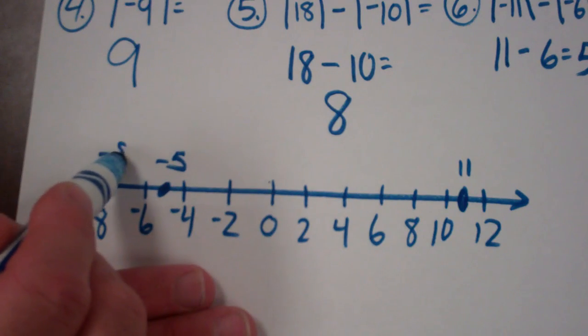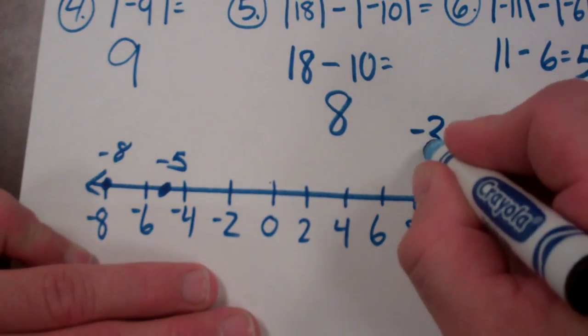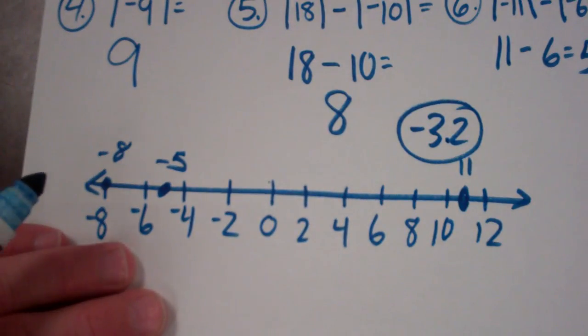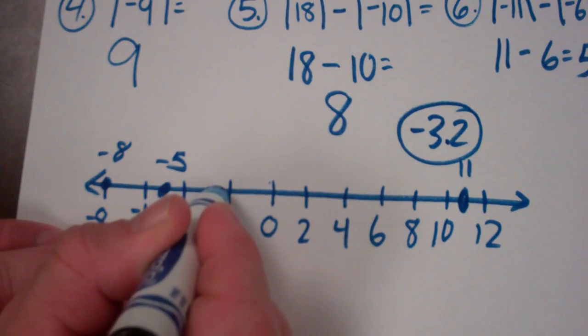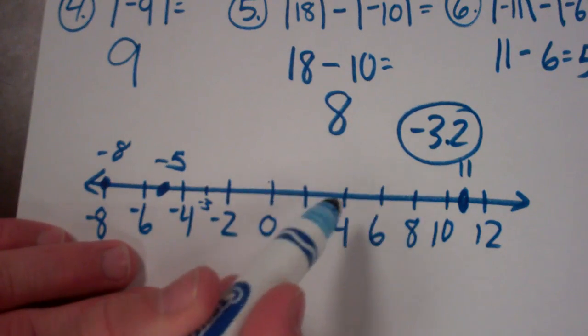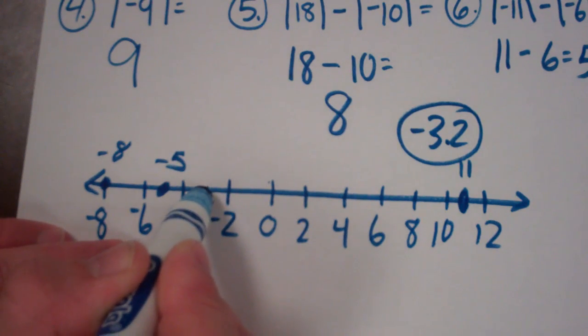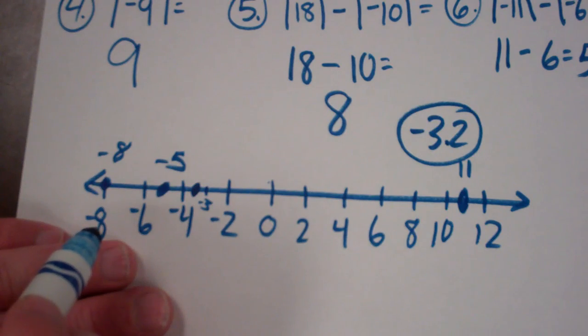The ones that confuse people, though, are things like this. Negative 3.2. So I'm going to graph negative 3.2. Some people will go to negative 3, which would be right here. And they'll think you go back to the right. You don't go back to the right because that would be thinking back like we're in the positives. You'd be counting negative 1, negative 2, negative 3. Negative 3.2 would be down here. Does that make sense?